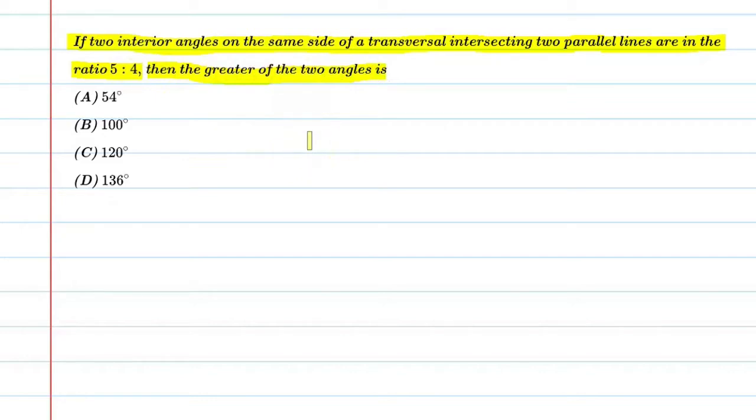In this question, we have given that there is a transversal line which intersects two parallel lines, and the interior angles on the same side are in the ratio 5 to 4.